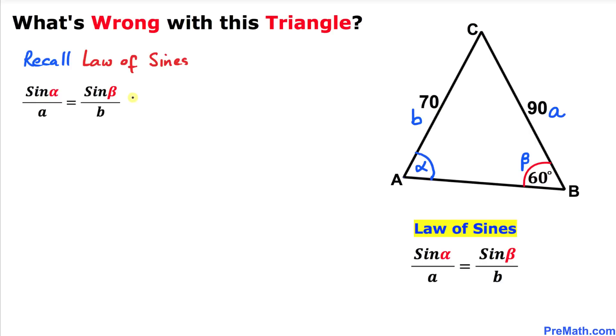Let's fill in the blanks in this formula: sine of alpha over a equals sine of beta over b. In our case, a is 90, b is 70, and angle beta is 60 degrees.